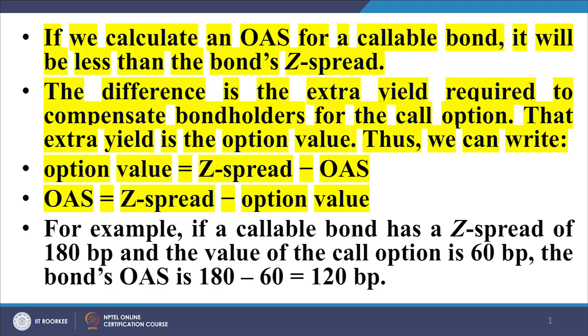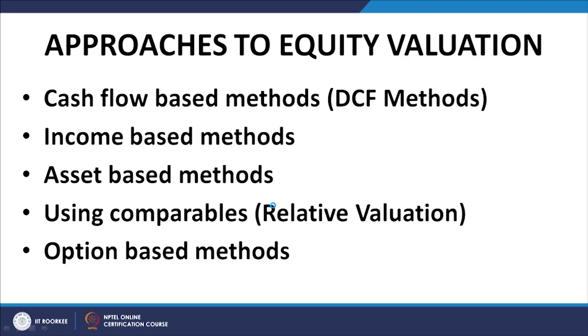For example, if a callable bond has a Z-spread of 180 basis points and the value of the call option is 60 basis points, then the option adjusted spread is 120 basis points. Then we moved on to equity valuation, considering cash flow-based DCF methods, income-based methods, asset-based methods, methods using comparables, and option-based methods. Our primary focus in this course is on DCF-based methods, which are the methods of choice in most cases.